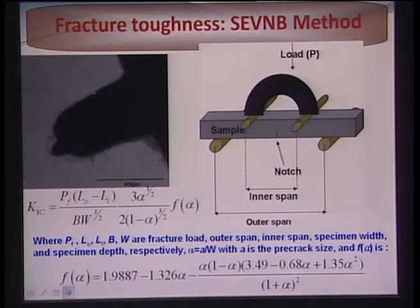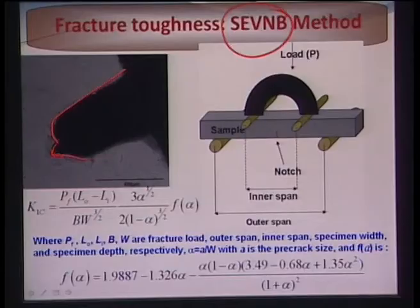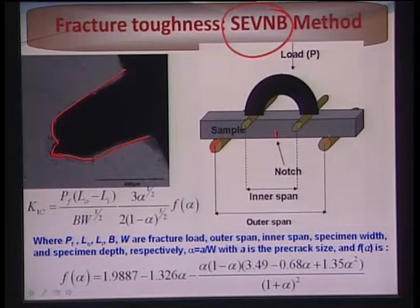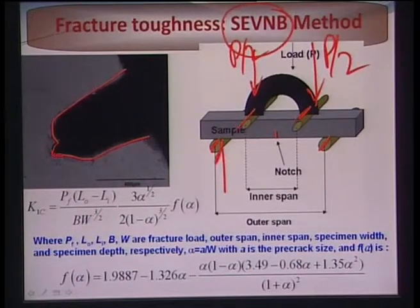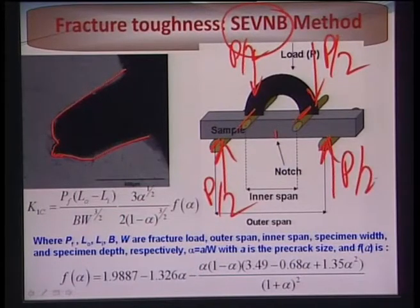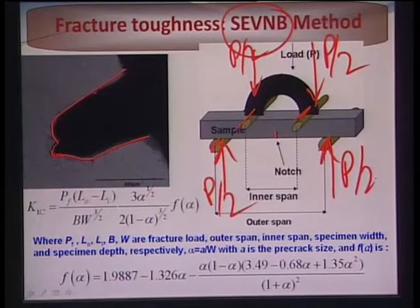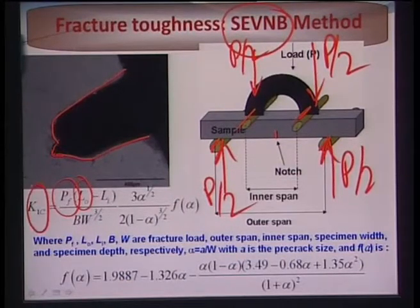Fracture toughness describes resistance to crack growth in a material. It is measured using the Single Edge V-Notch Beam (SEVNB) technique: a V-notch is made at the root of a beam, the notched sample is placed under a four-point flexural configuration with two support rolls and two loading rolls applying P/2 load each, and from the crack length and fracture load the mode-I fracture toughness K1C (critical stress intensity factor under mode-one loading) is calculated.